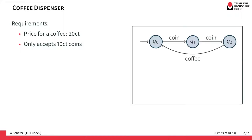So let's have a look at this first possible model of this coffee dispenser. It has only three states, can take in two coins, and will then dispense a coffee. So it should be a reasonable model for our coffee machine.